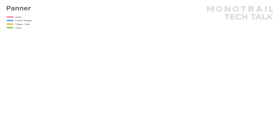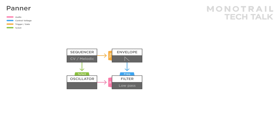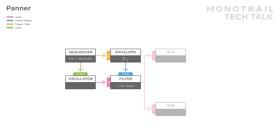Panners are fun tools that can be used to create a stereo sound or divide a control voltage over multiple destinations. And they're easy to patch up. Let's start with a simple example, using an oscillator and filter synth voice, controlled with a sequencer and envelope. You can easily create a panner by sending two copies of a single signal — in this case the audio from the filter — to two VCAs.